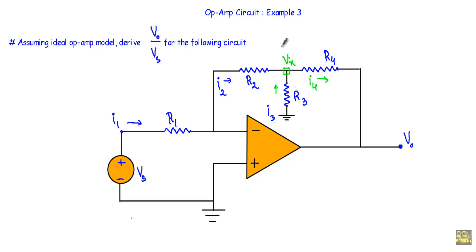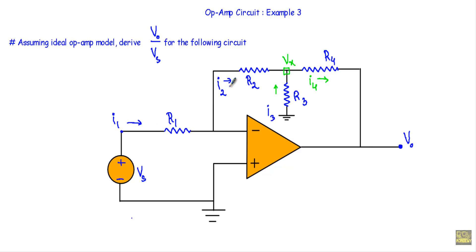In this video I will show you another example of op-amp circuit. This will be the third example out of eight examples. Assuming ideal op-amp model, derive Vo by Vs for the following circuit. At the inverting terminal we are applying Vs through R1, and this is our output voltage Vo. So we are asked to calculate the gain of this circuit using the indicated parameters.